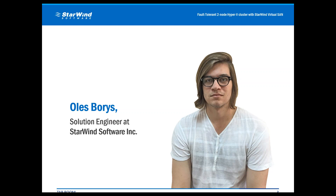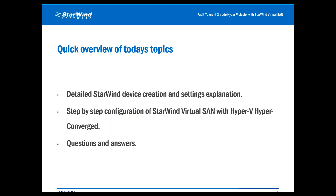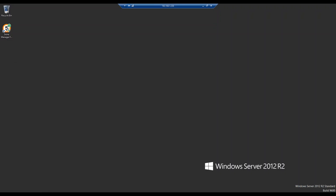Moving on to the next slide, here we see what we're going to talk about today. We are going to talk about StarWind devices — I will explain each setting, and then I'll show you the configuration of StarWind with hyper-converged Hyper-V. To start with that, we will need the Windows Server which has StarWind installed on it.